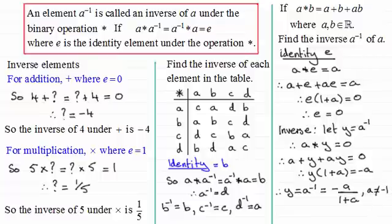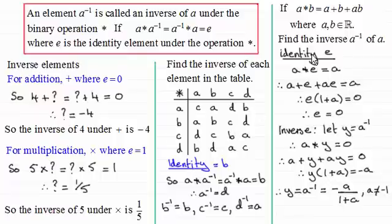I hope that's given you some idea of what we mean by an inverse element, its notation, and how we can work it out from a table and also when we're given the binary definition. Don't forget you always need to be aware of what the identity element is before you can work out the inverse elements.